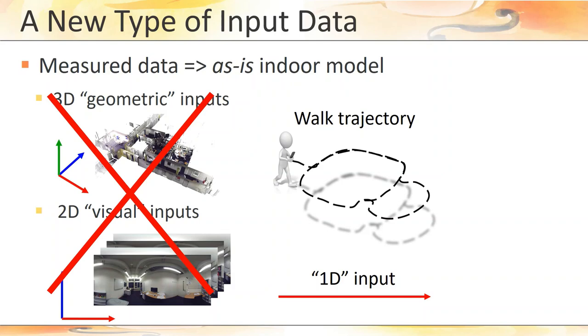However, there are actually two problems with its use. First, a walk trajectory only contains sparse evidence of some walkable locations and it's not at all obvious how to build a full-fledged indoor model from it.